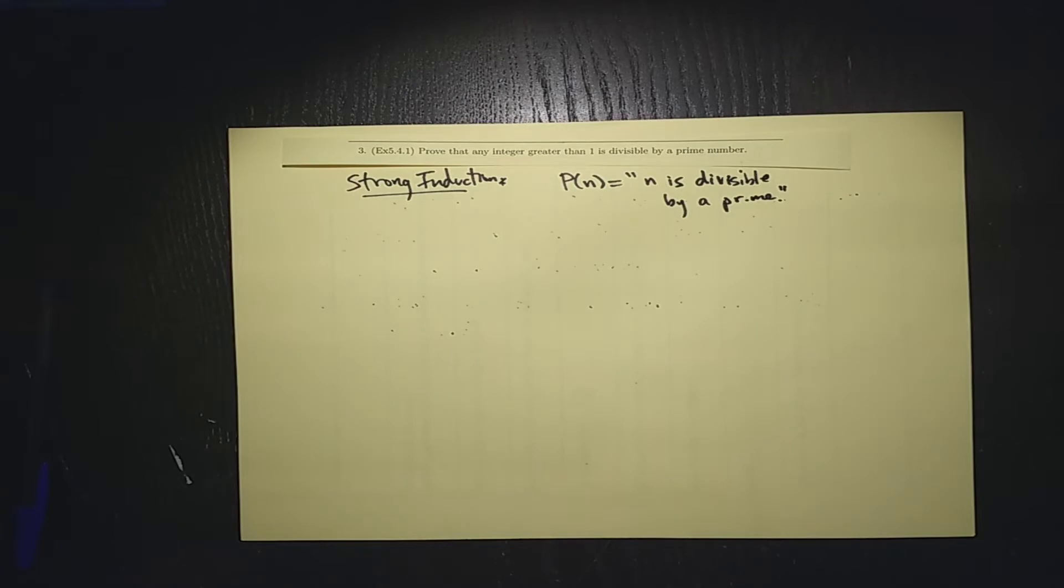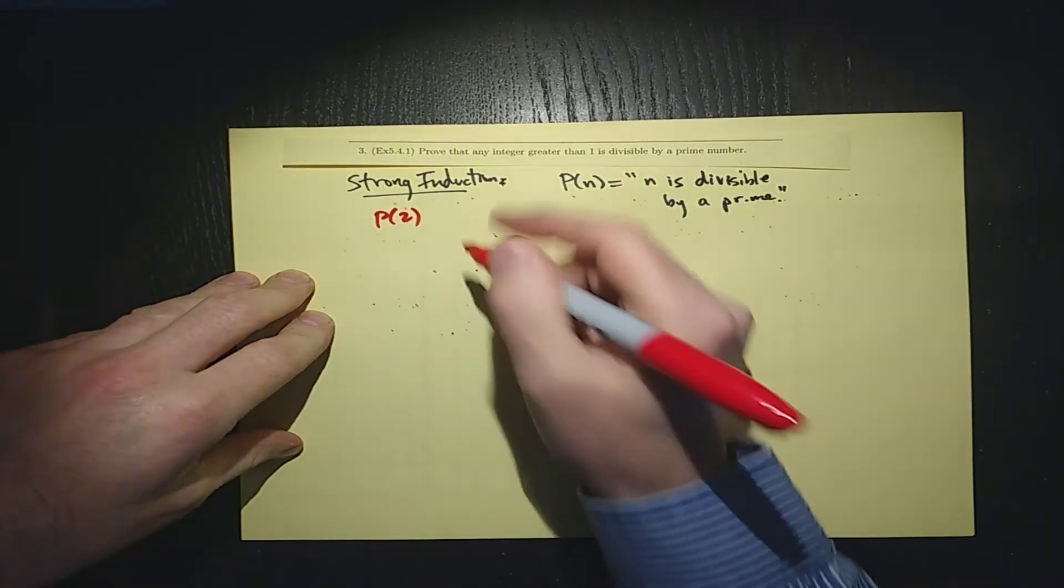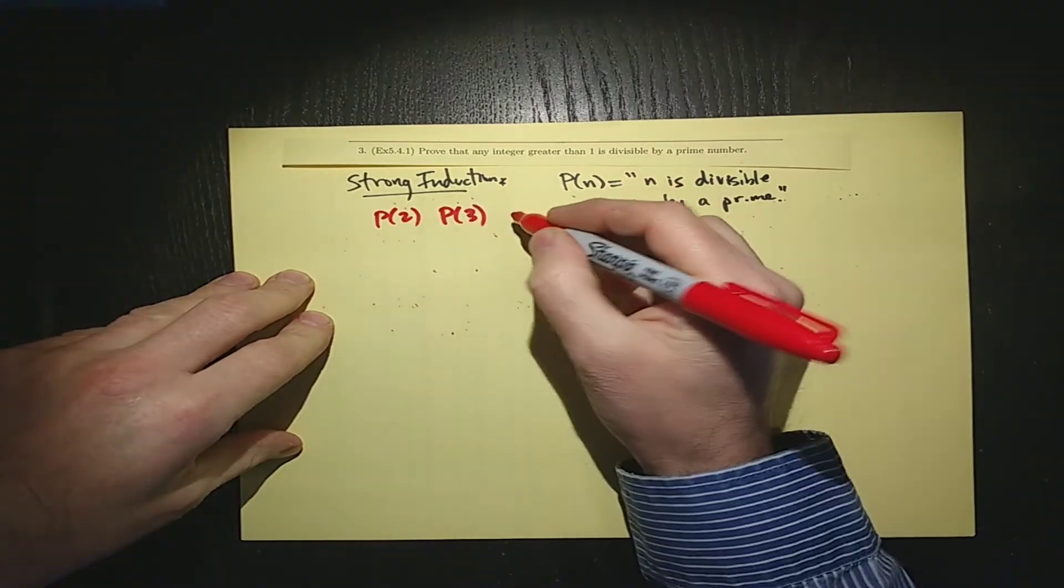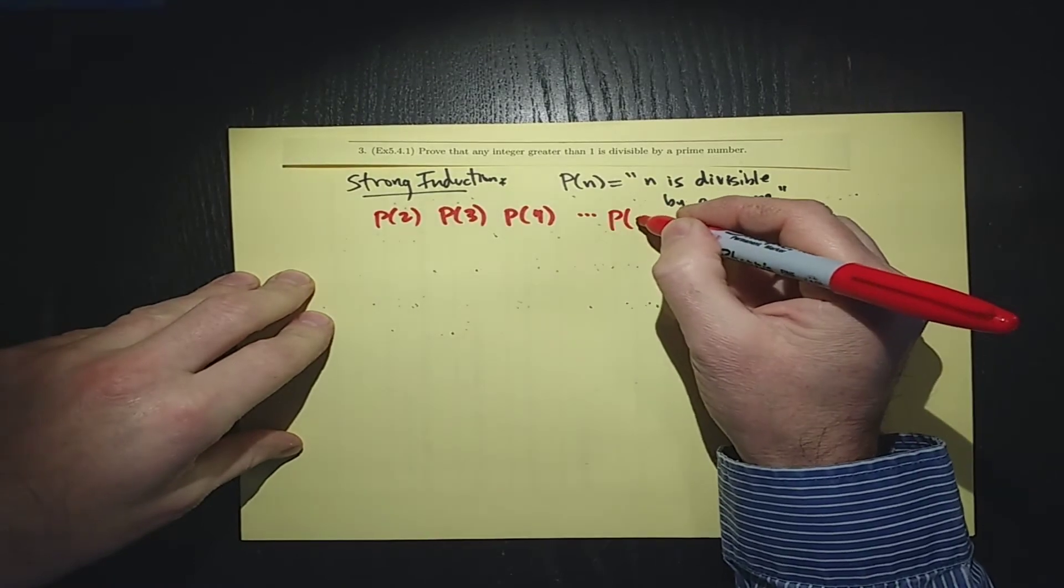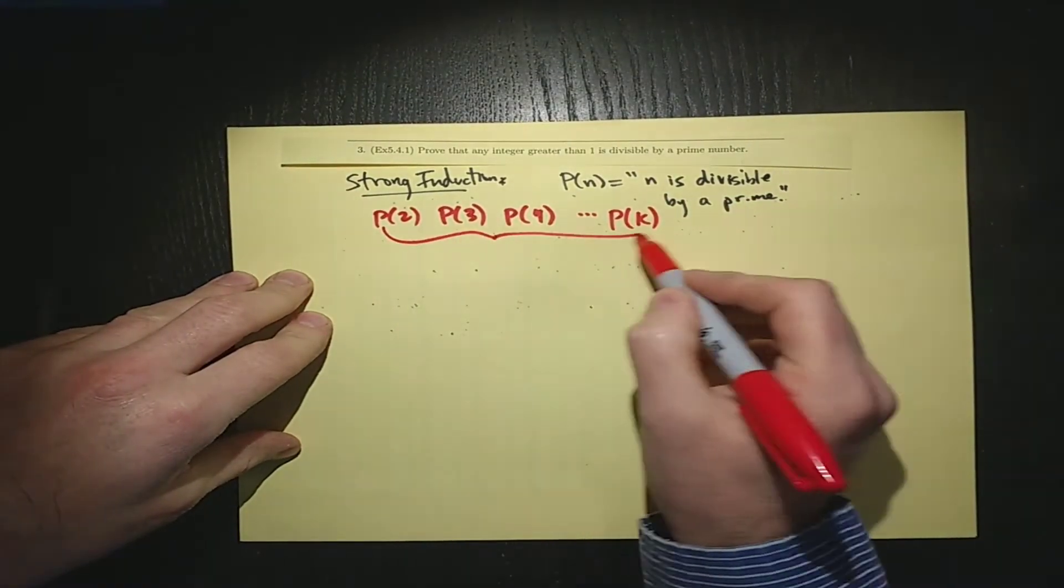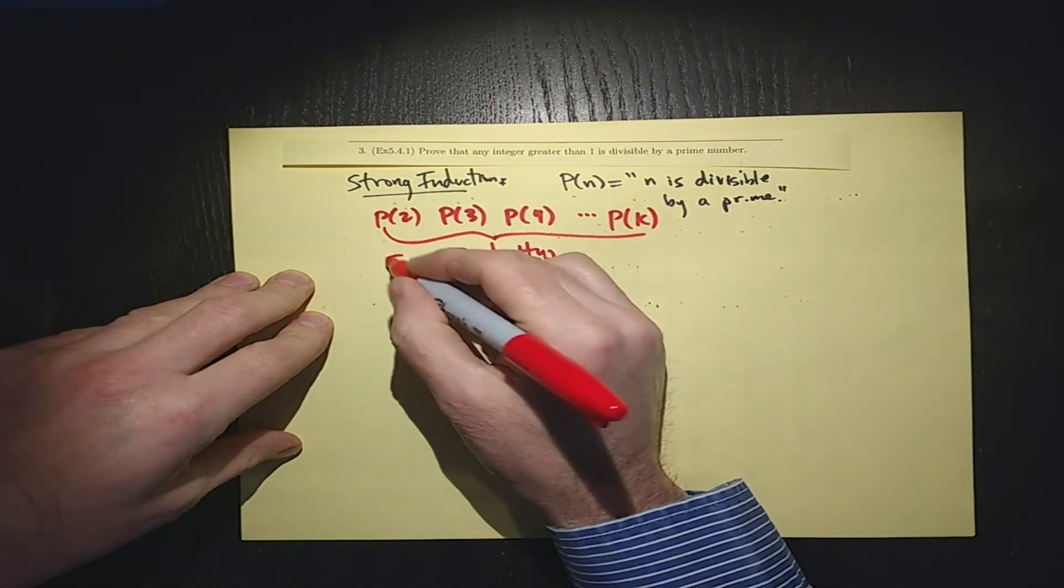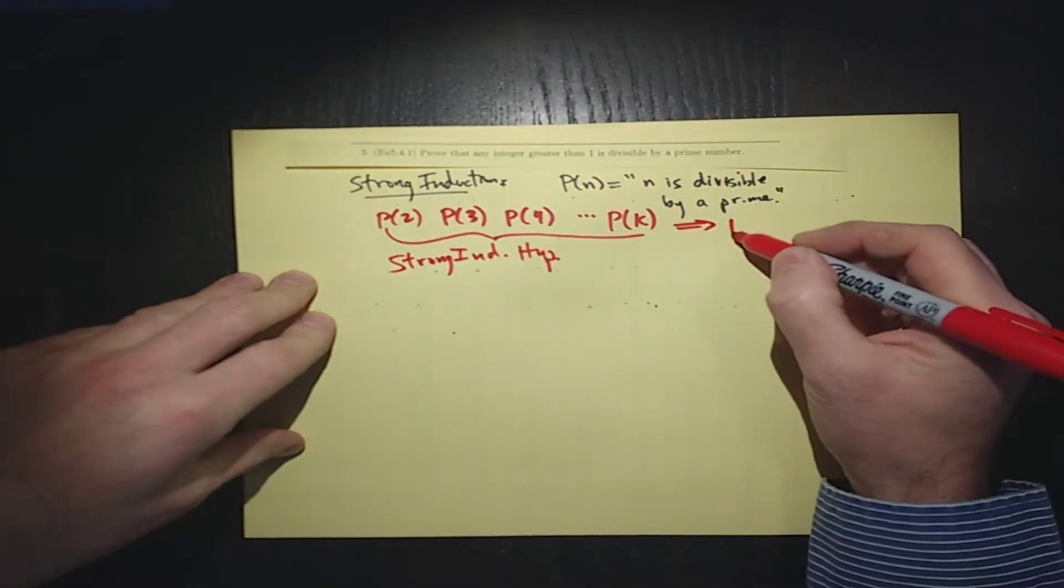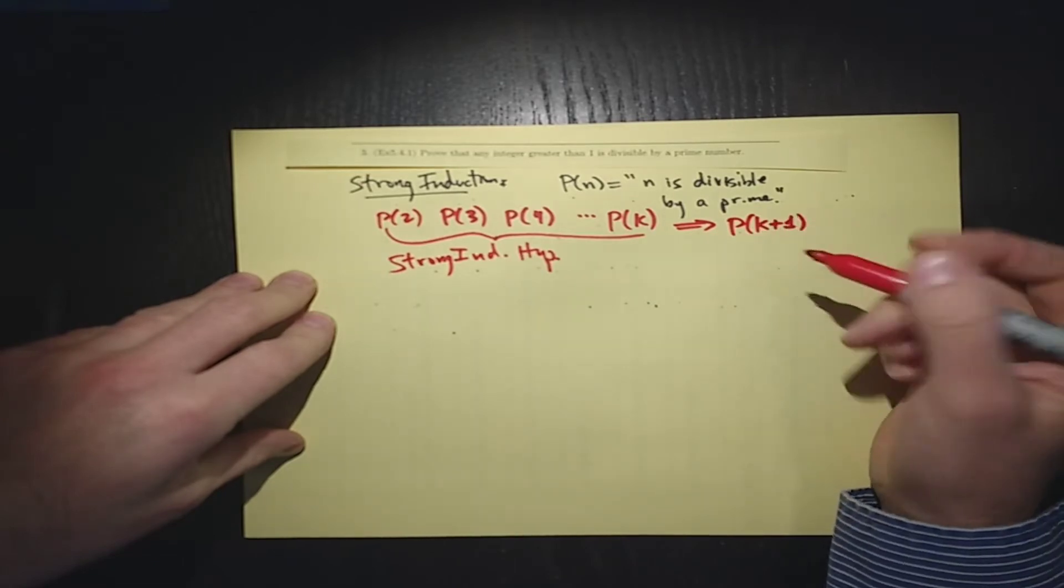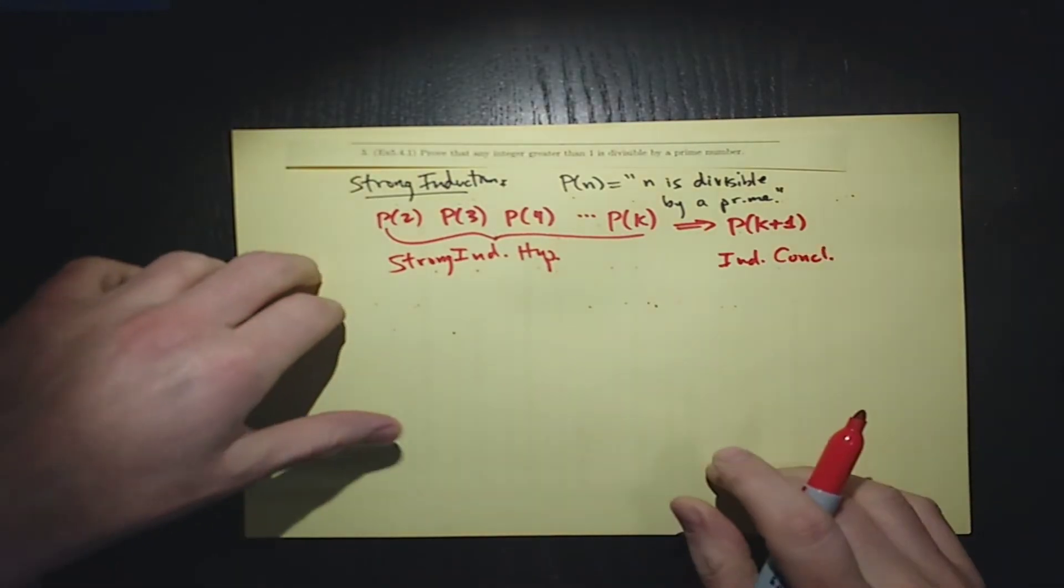And so when we do this, we want to prove that P(2) is true, we want to prove that P(3) is true, that we want to prove that P(4) is true, all the way up to P(k). That's our induction hypothesis. Actually, that's our strong induction hypothesis. And then that should prove that P(k+1) is true. This is the induction conclusion, although nobody calls it that except for me.